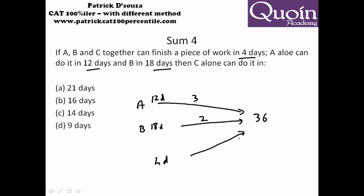That means C will do 9 minus 5, which is 4 units of work per day. So 4 units of work, 36 upon 4 will give you 9 days to complete the work. So we get 9 days as the answer.